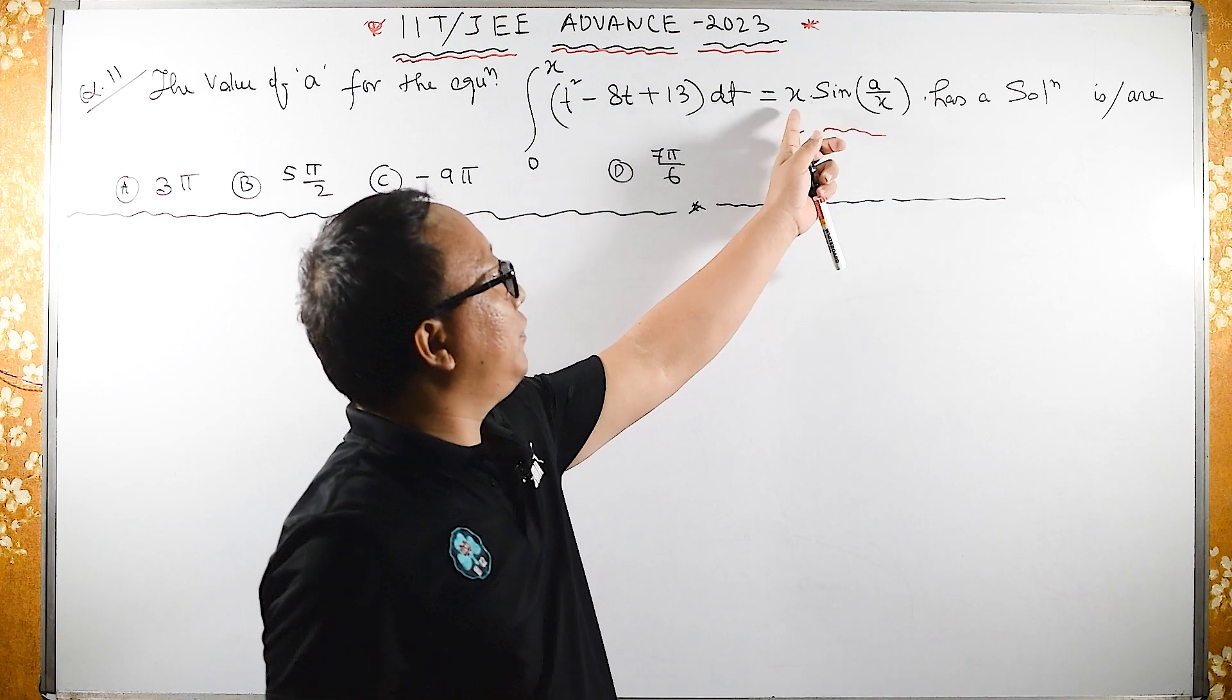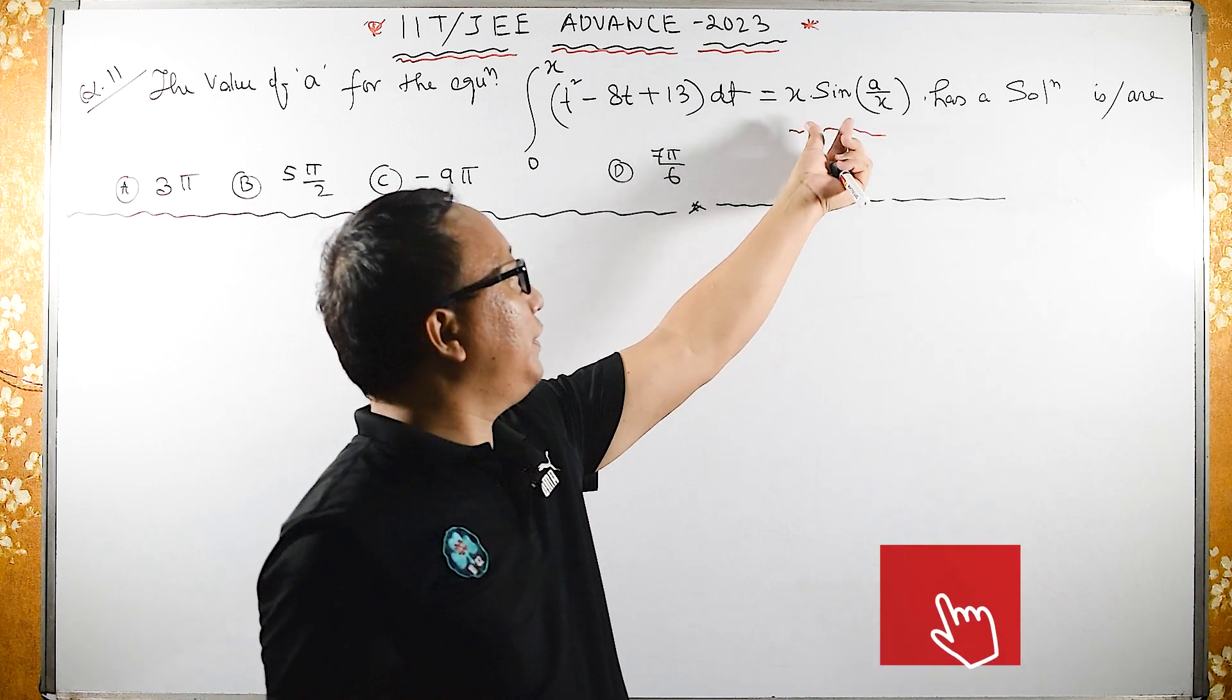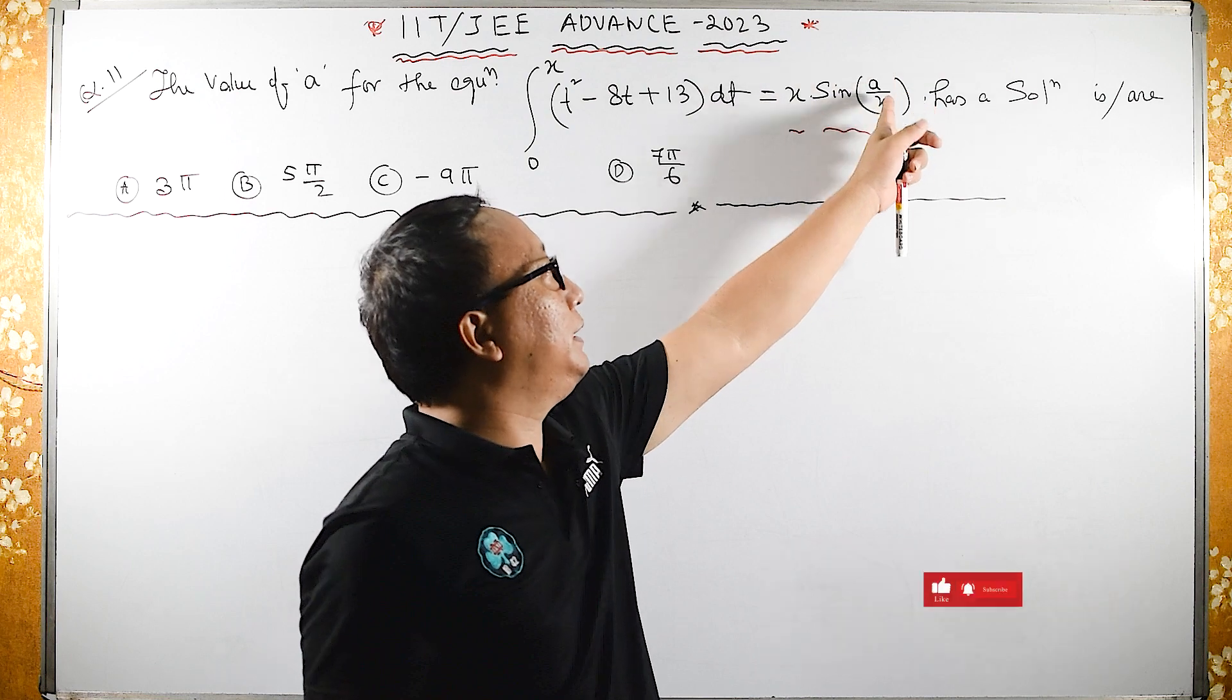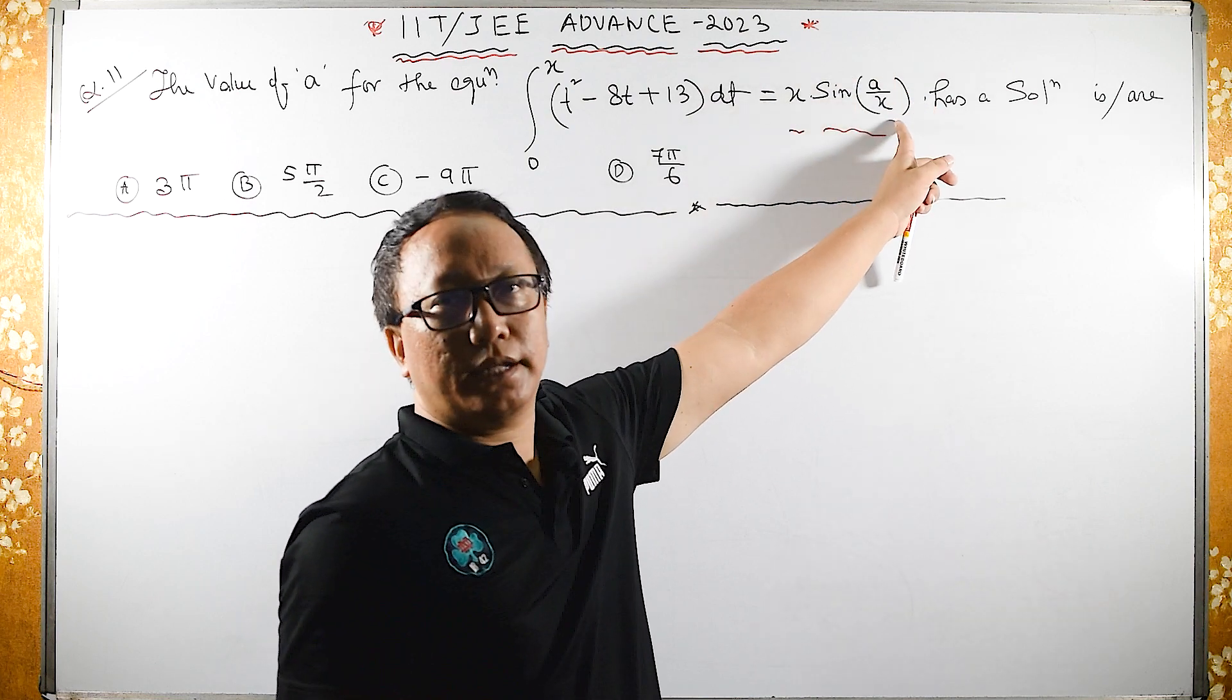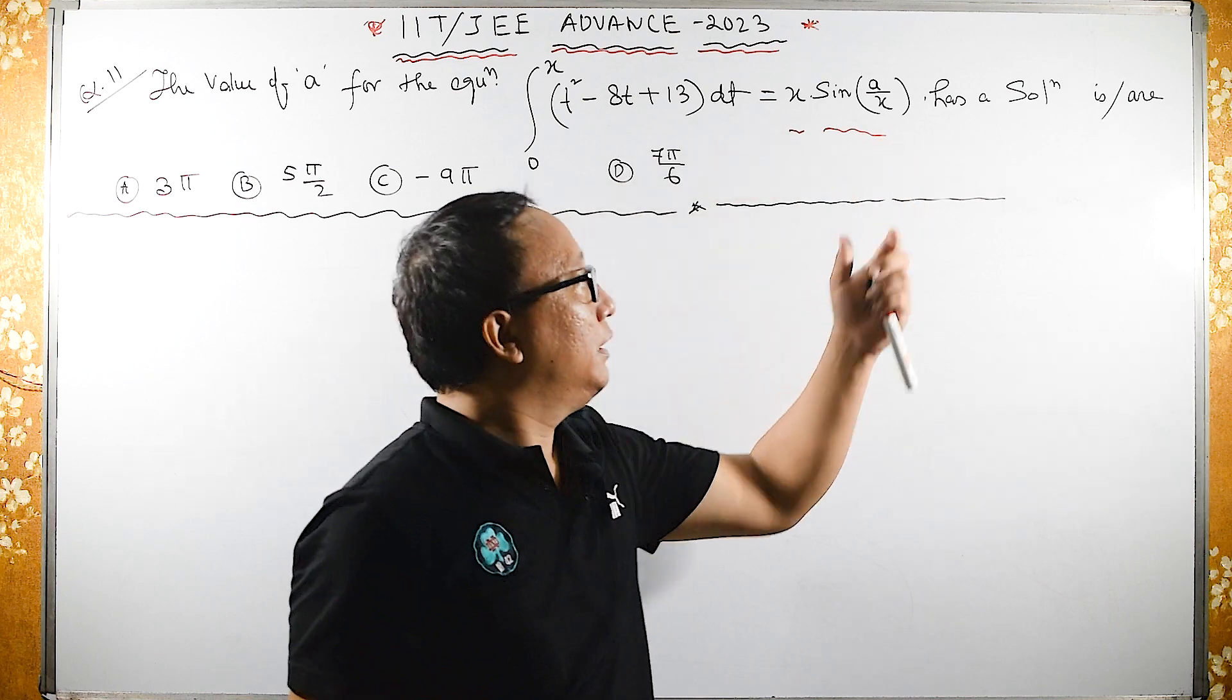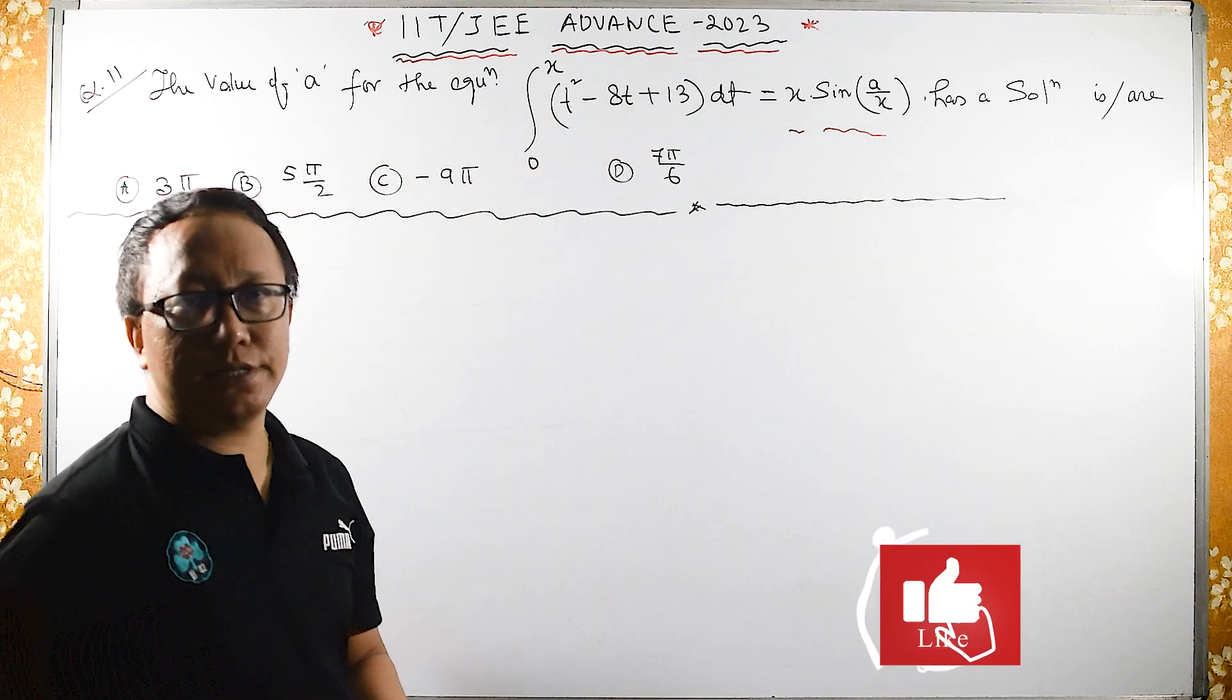If you apply product rule to X·sin(A/X), when you differentiate sin you'll get cos(A/X), and you have to differentiate A/X again with respect to X. So it is complicated. What I will do is directly integrate it and let us see how it works.